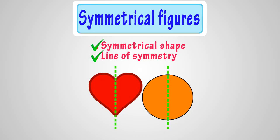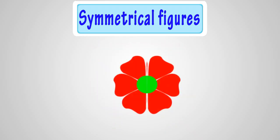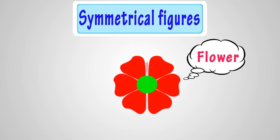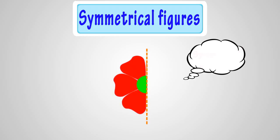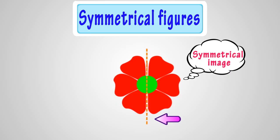Now, let's try this with another figure. Here we have an image. Let's try to fold it and see if it is a symmetrical figure or not. Here we are folding it. If we fold this image here, it completely covers the other half. So, it's a symmetrical image. And this line of fold is its line of symmetry.